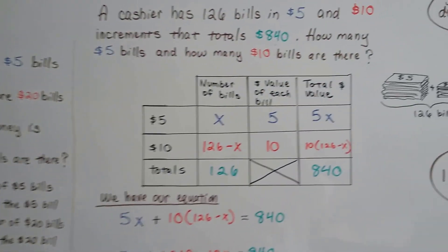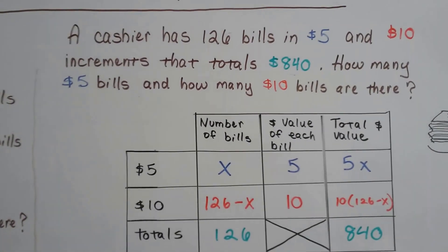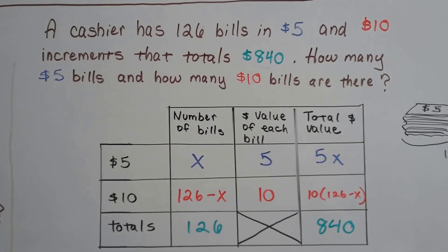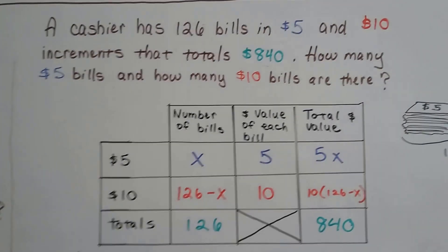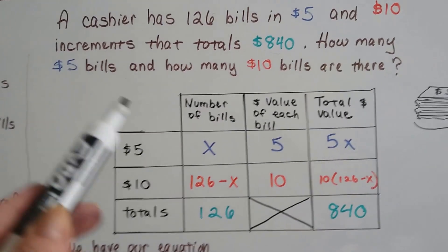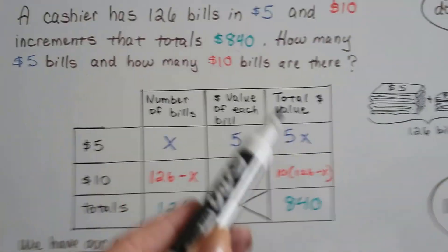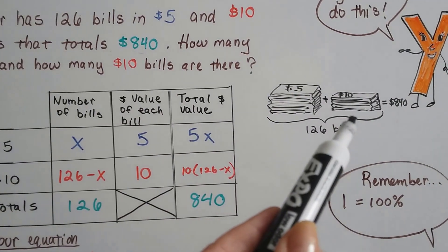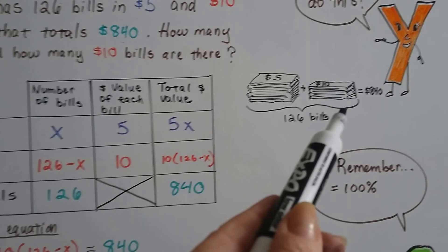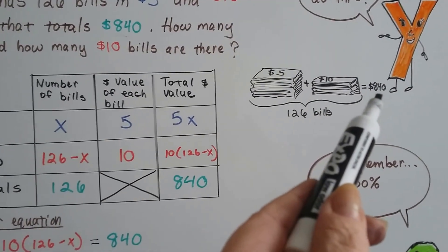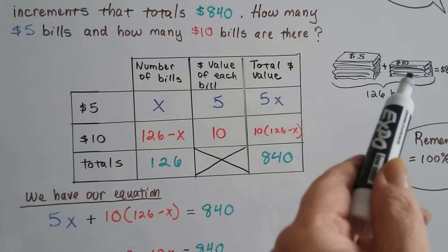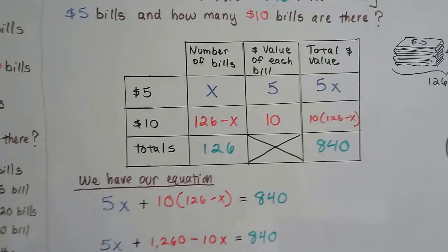Let's try another one. A cashier has 126 bills in $5 and $10 increments that totals $840. How many $5 bills and how many $10 bills are there? Now they do want to know how many of each type. There's a pile of $5 bills and there's a pile of $10 bills. And altogether, there's 126 of them. But when you count the money, we've got $840. That's what we're trying to find out. How many are in this pile and how many are in this pile? We make our table.